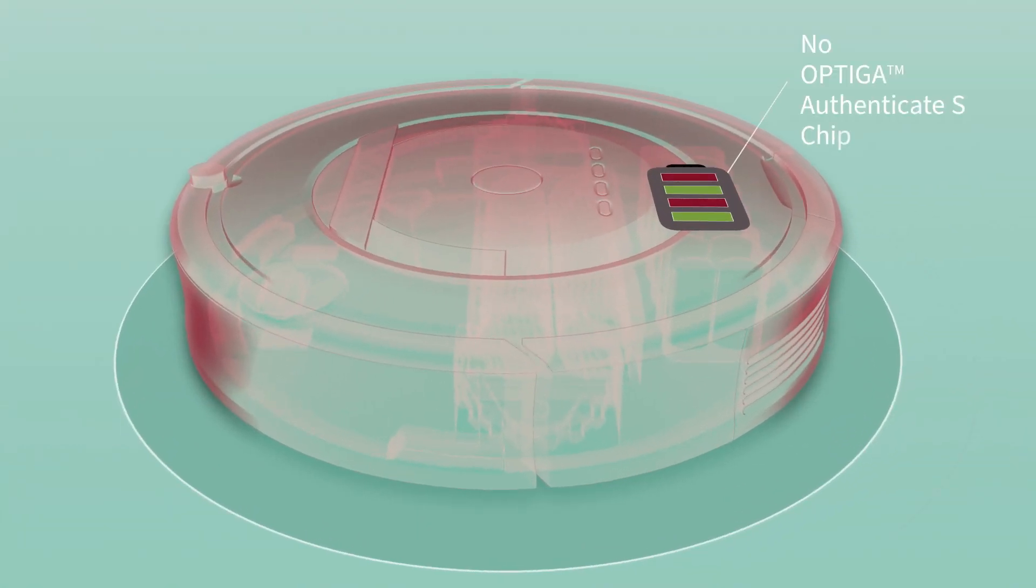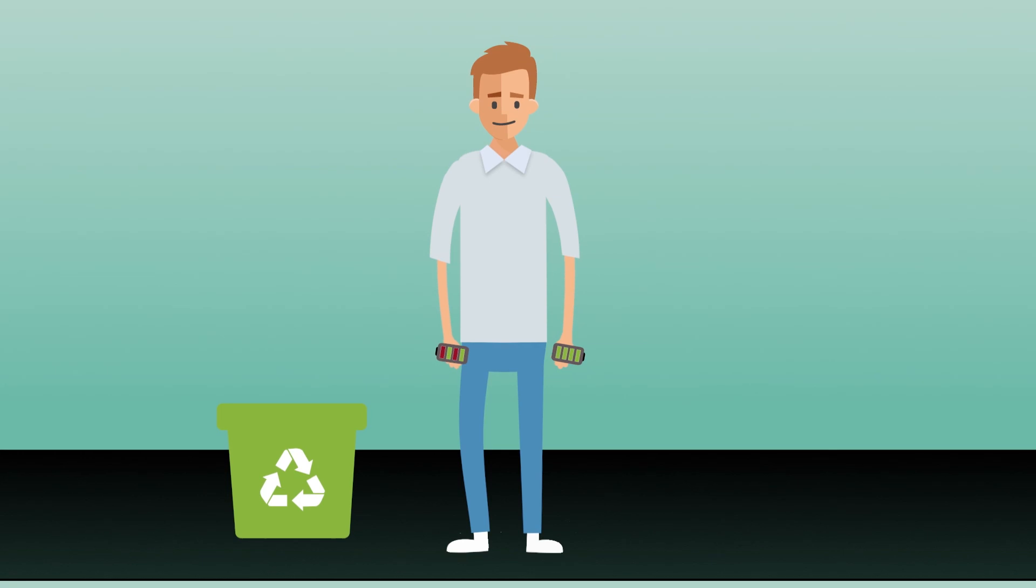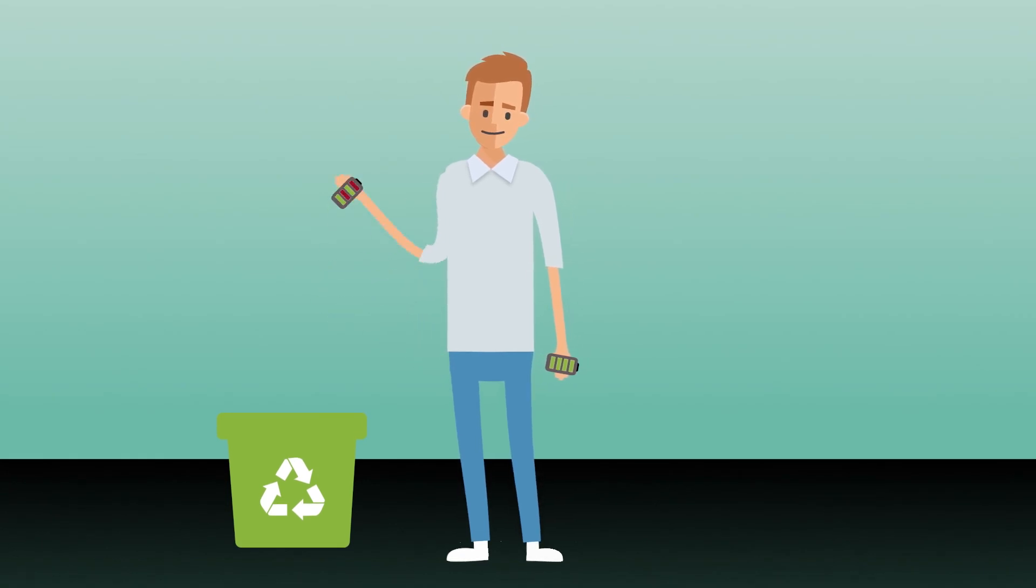If there is no Optiga Authenticate S chip inside, the battery cannot identify itself as genuine. The all-important unique authentication check between the robot and the battery fails. In this case, the system informs the user, and possibly the manufacturer, that safety may be compromised, and it may limit or even stop recharging the non-genuine battery.